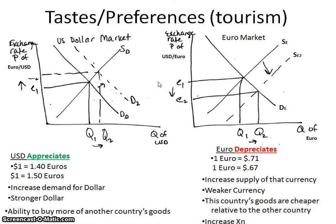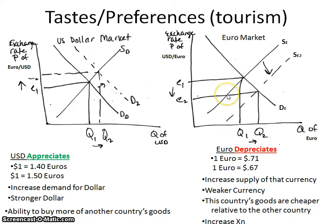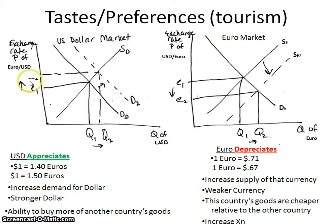You could frame this as an increase in demand causing an increase in supply, or alternatively as a decrease in the supply of the dollar market — since fewer dollars are being used — which leads to a decrease in demand in the European market since they're not utilizing their euros. Either framing is acceptable; you just need to make sure the exchange rate is going in the right direction.